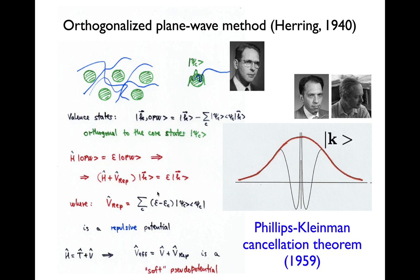because the energies of the wave functions for the valence part are higher than the eigenfunctions, eigenvalues of the core states. So this is a repulsive potential.